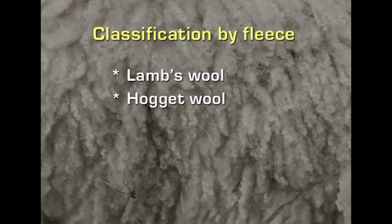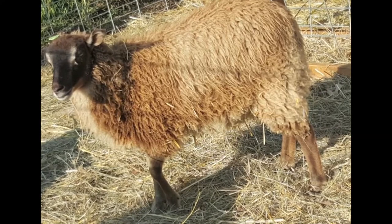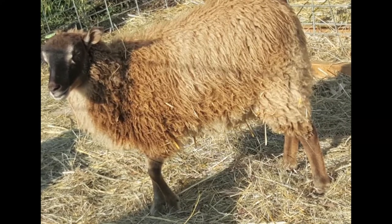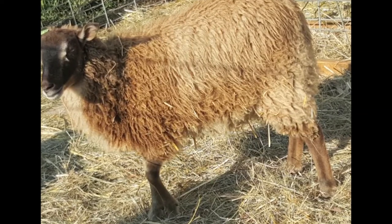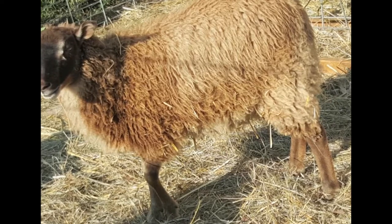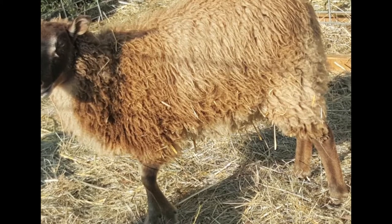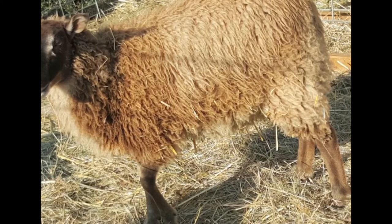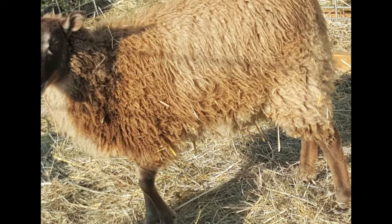The next variety is hogget wool. This wool is also shorn for the first time, but from an animal which is around 12 to 14 months old. Similar to lamb's wool, it also has a tapered end and the fiber is very smooth. But it is stronger than lamb's wool because the animal has aged and matured enough. Because of its strength, it is mostly used in warp yarns when the fabric is woven.